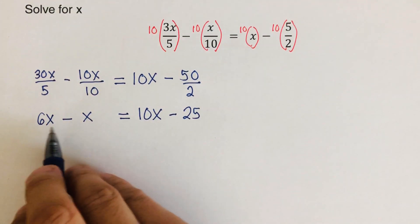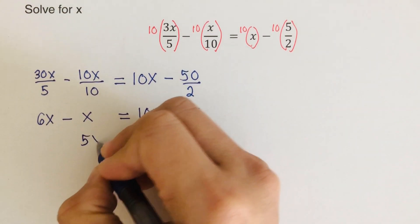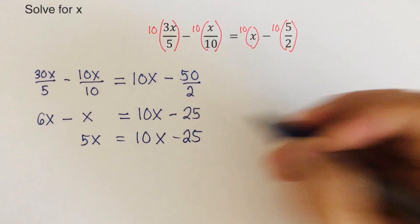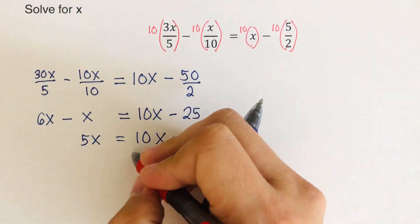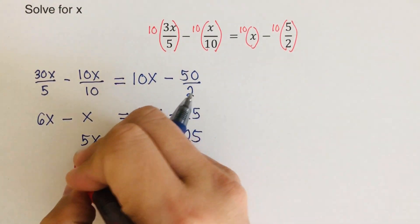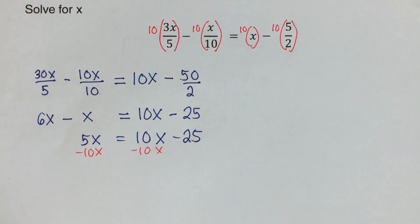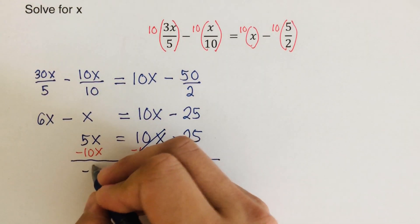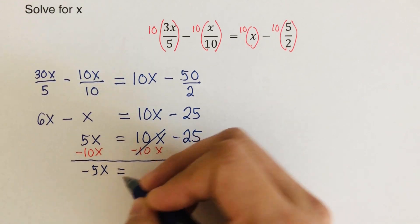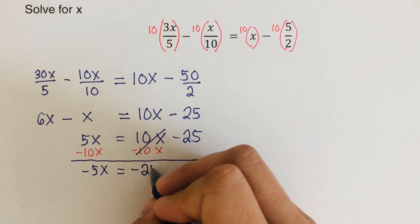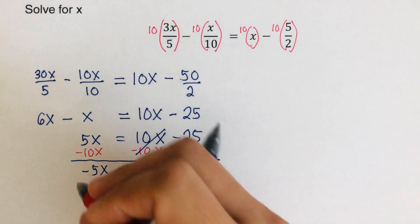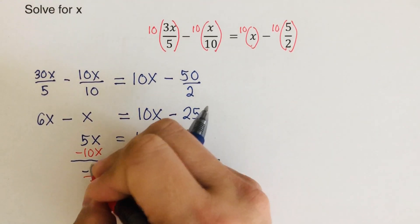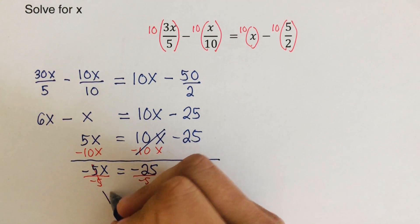Combining like terms: 6x minus x is 5x, which equals 10x minus 25. Subtracting 10x from both sides gives negative 5x equals negative 25. Dividing both sides by negative 5, x equals positive 5.